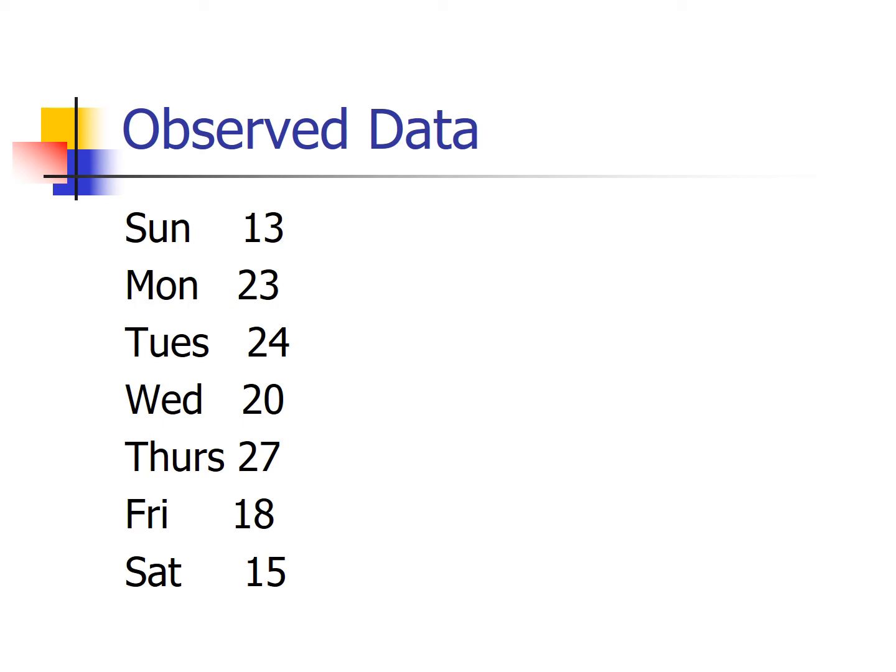The actual numbers are not perfectly evenly distributed — if they were, we'd have 20 in every category. But are they so far from even distribution that we think the true underlying probabilities are different from one-seventh? We're basically saying population proportions would be 1/7 for each day and want to see whether that's consistent with our observed sample.